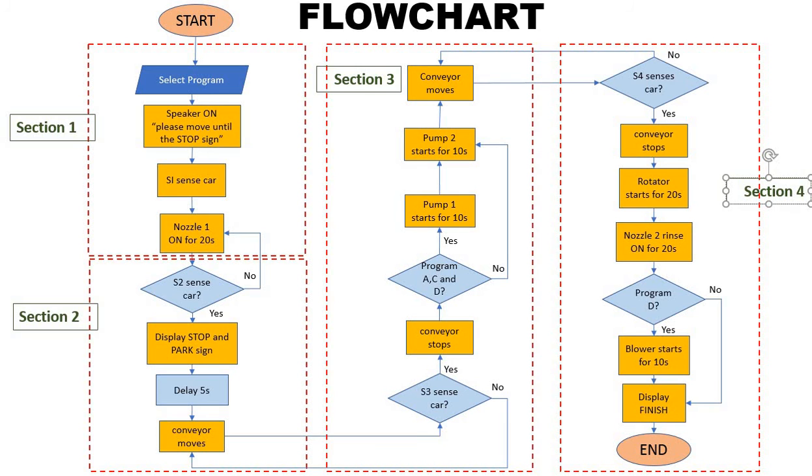As sensor 1 senses the car, nozzle 1 is turned on. At the end of section 2, sensor 2 will sense the car and display the stop and park sign.